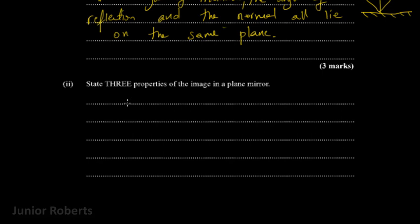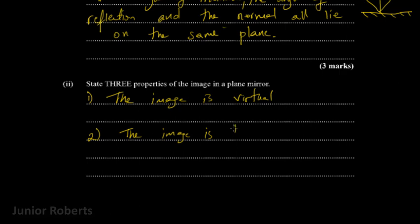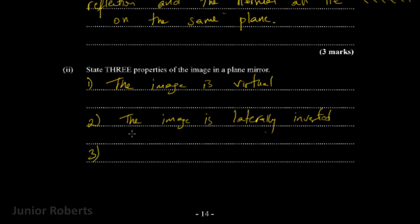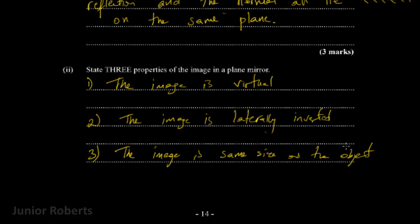This part of the question asks us to state three properties of the image in a plane mirror. First, the image is virtual. Second, the image is laterally inverted, which means the left side becomes the right and the right side becomes the left. Third, the image is the same size as the object. Those are three properties of the image formed by a plane mirror.